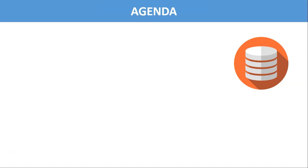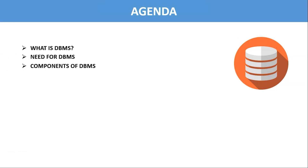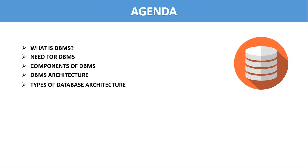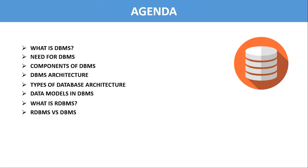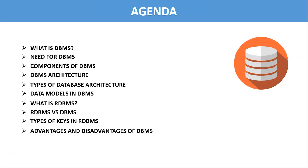Let us discuss the agenda for today's session. We'll start by understanding what DBMS is and look at some popular DBMS softwares. Next, we'll understand the need for DBMS, then go through different components in DBMS and how it works. After that, we'll look at DBMS architecture and types of database management system architectures. Next, we'll go through different data models, then understand what RDBMS is, the difference between RDBMS and DBMS, followed by different keys used in RDBMS. Towards the end, we'll discuss the advantages and disadvantages of DBMS and look at some real-life applications as well.